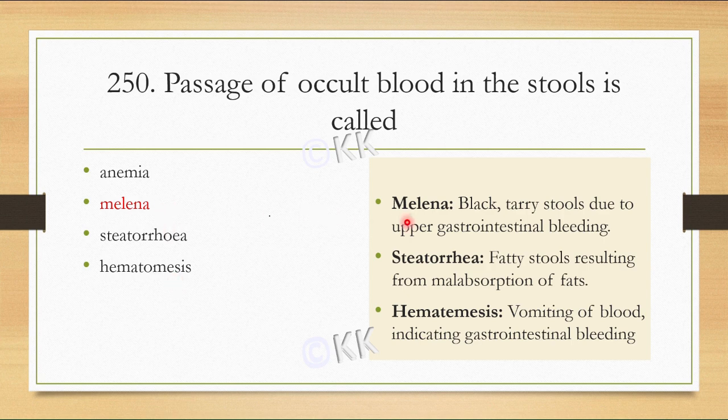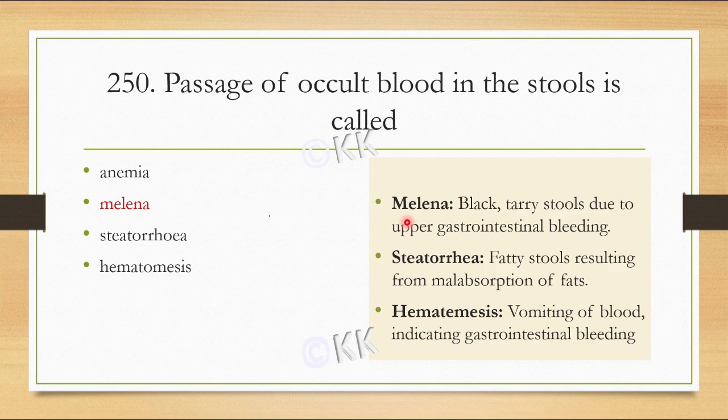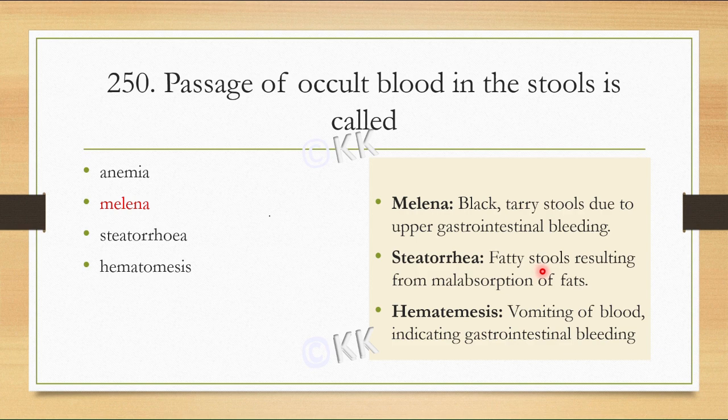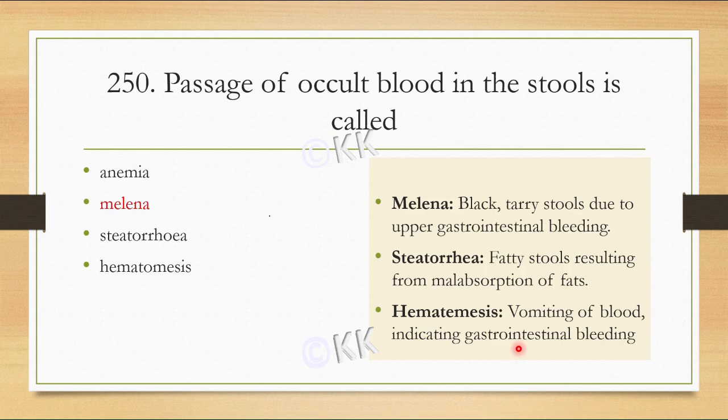Melena means black tarry stools due to upper gastrointestinal tract bleeding. Steatorrhea means fatty stools resulting from malabsorption of fats. Hematemesis means vomiting of blood, indicating gastrointestinal bleeding. Anemia you already know.